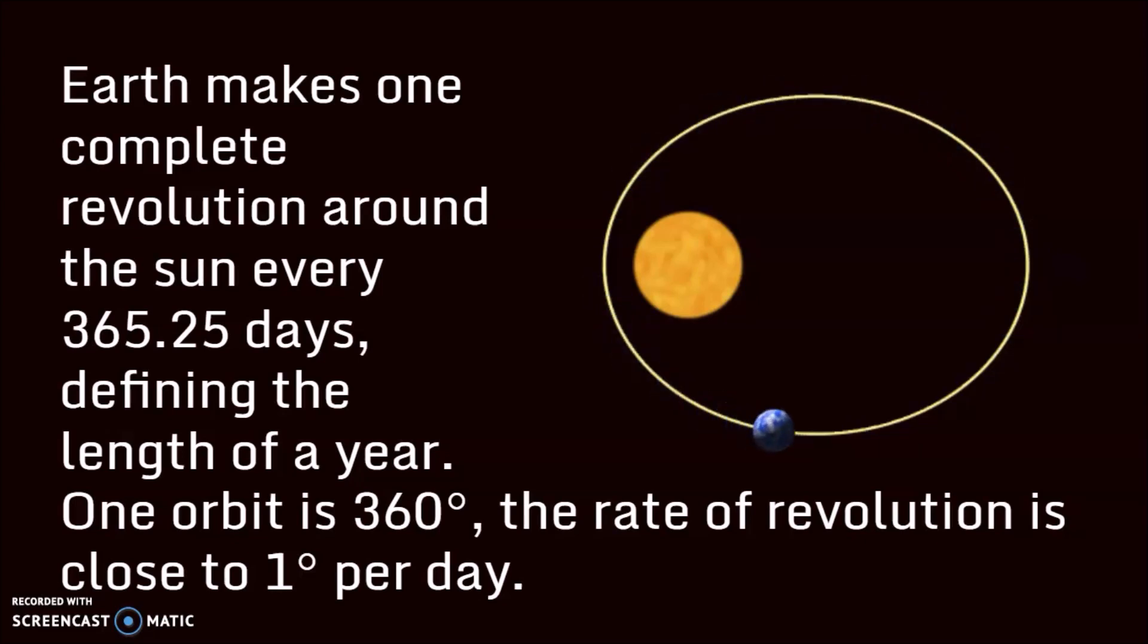One orbit is 360 degrees, so the rate of revolution is going to be just under one degree per day.